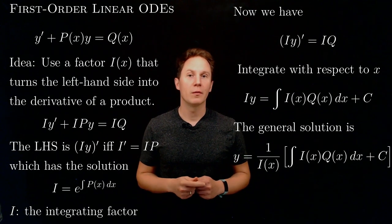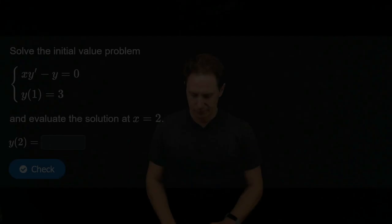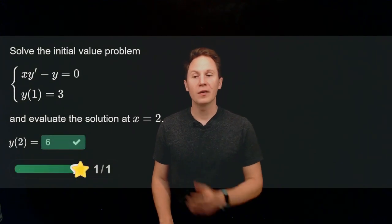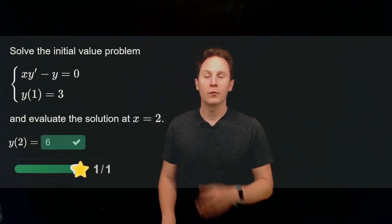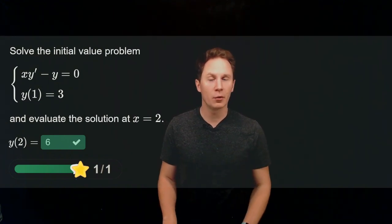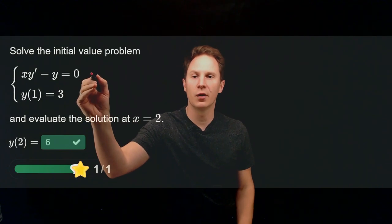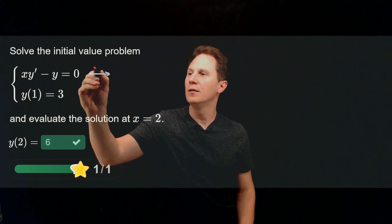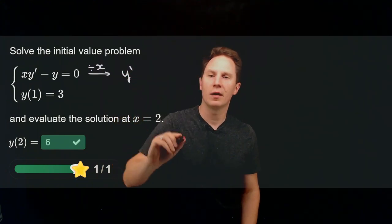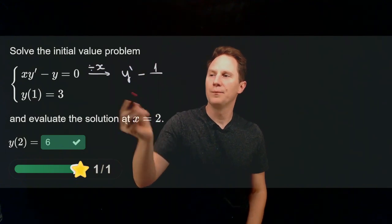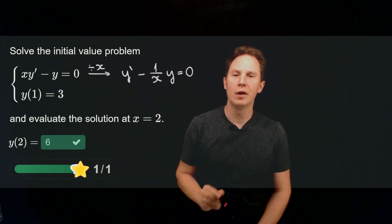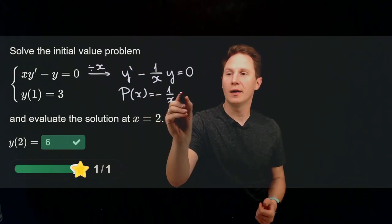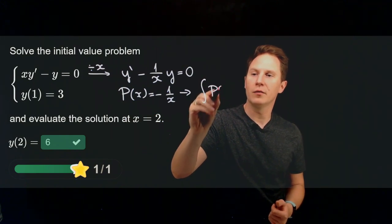Let's solve some first-order linear ODEs using integrating factors. For the first example, solve the initial value problem and evaluate the solution at x equals 2. You may notice this ODE is actually separable, but let's ignore that and use the integrating factor method. We divide both sides by x to get it in standard form: y prime minus 1 over x times y equals 0. Therefore p of x in this problem is negative 1 over x.